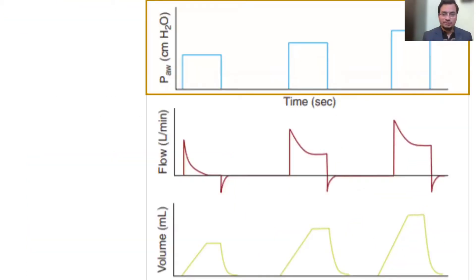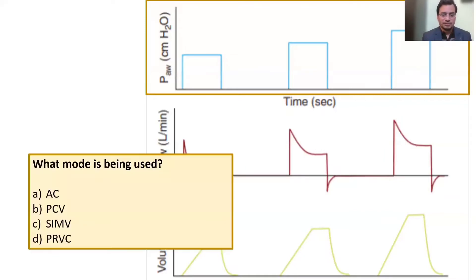Look at the pressure-time scalar closely. The pressure in inspiration reaches a certain limit, after which it stays constant, and then suddenly drops to zero. This pattern is called the square wave pattern, where pressure is constant during the individual breath, which is very peculiar to the pressure-controlled breath. So only options B and D are pressure-controlled breaths here.